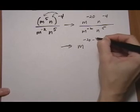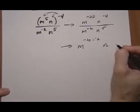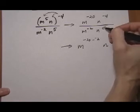So minus 20 take away a negative 2. So watch the double negative go in there. You don't want to lose one of the negatives. And then n to the minus 4 minus 5.